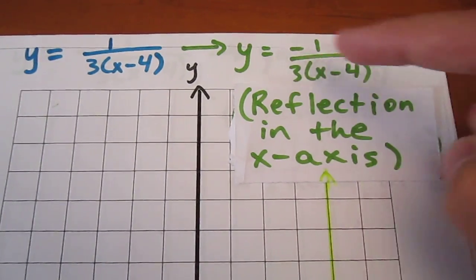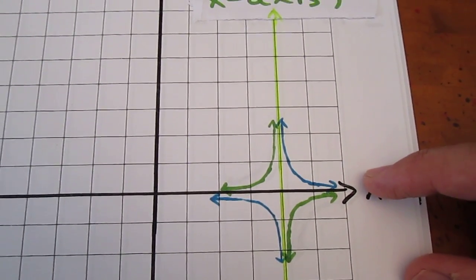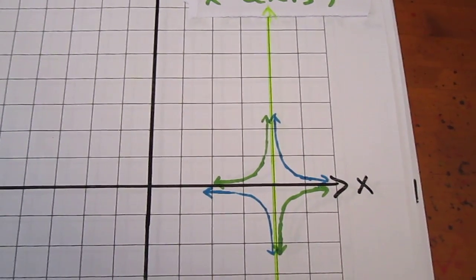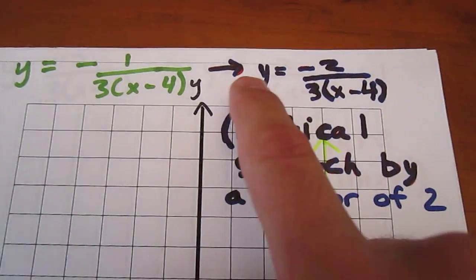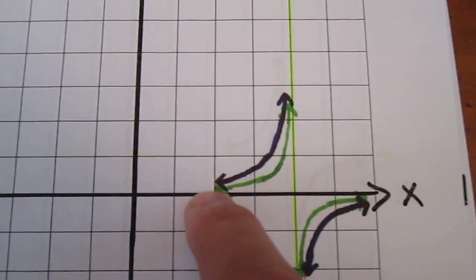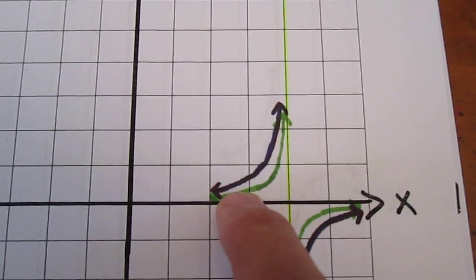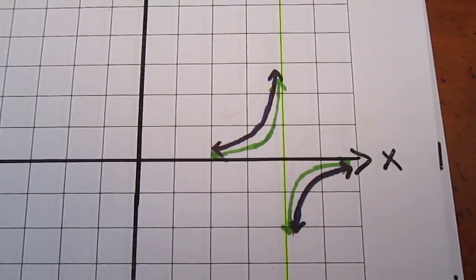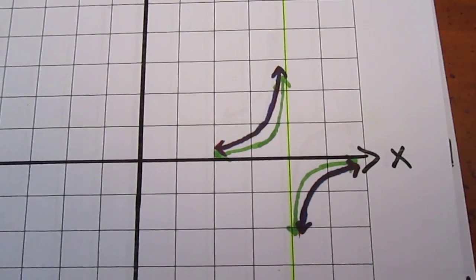Next we consider the effect of a factor of negative 1, which is a reflection in the x-axis. The blue curve gets reflected up to become this green curve, and the lower portion of the blue curve gets translated down to become the lower portion of the green curve. We can now ignore the blue and focus on the green — we are 3 transformations in. We then consider a vertical stretch by a factor of 2: every y-coordinate gets multiplied by 2, doubling the distance of every point from the x-axis, whether above or below. We can now ignore the green curve and focus on the blue.